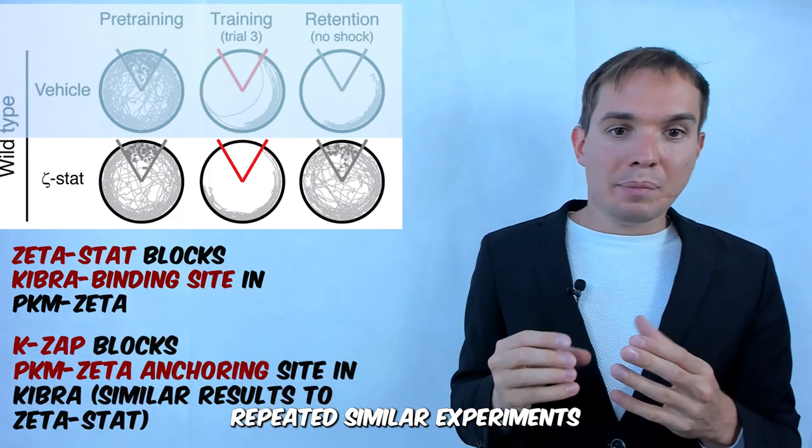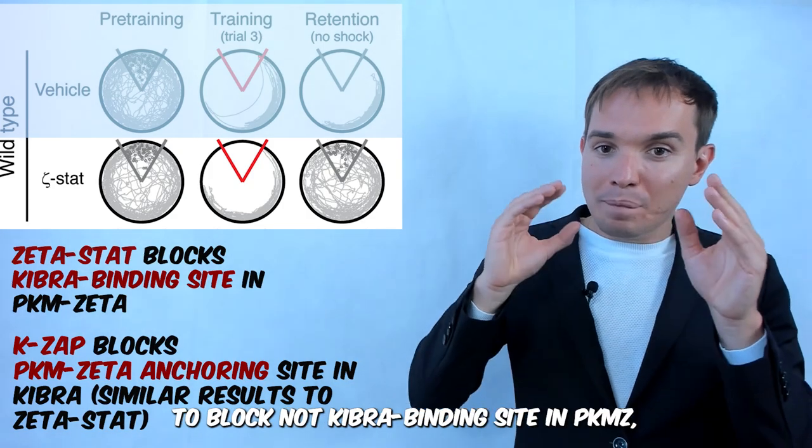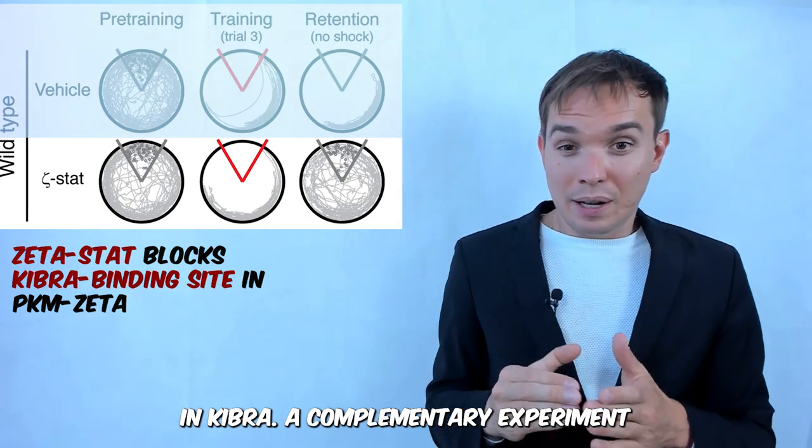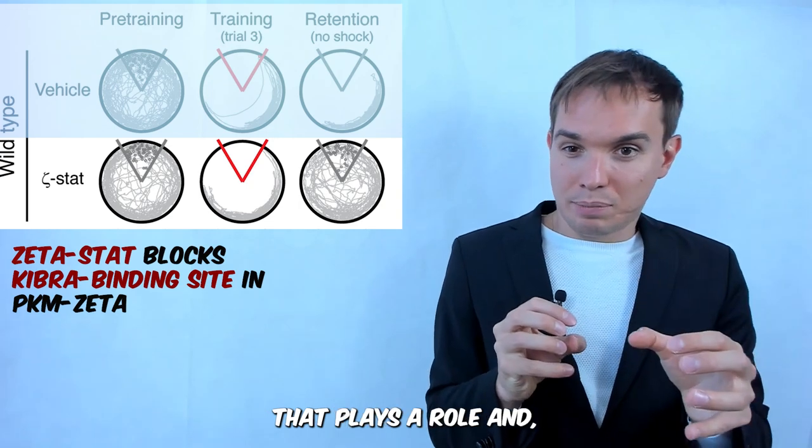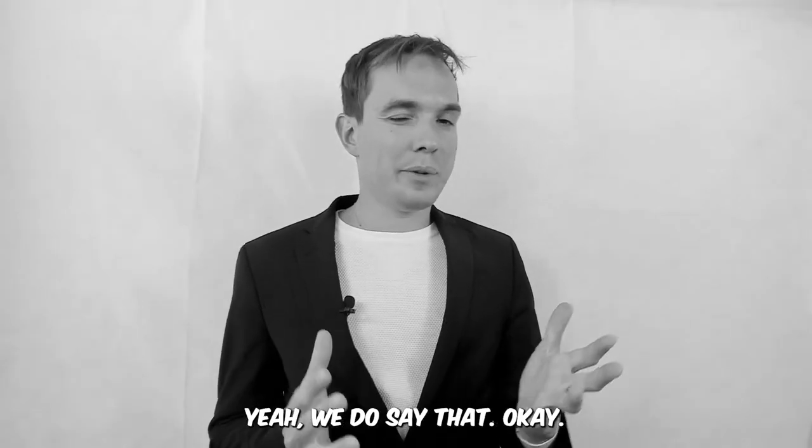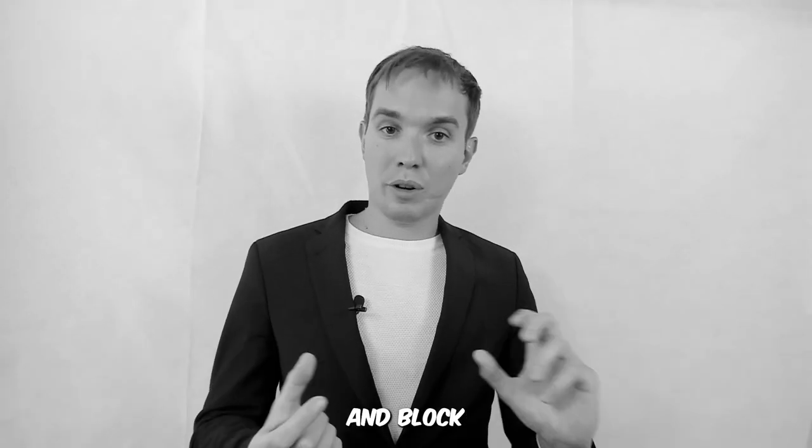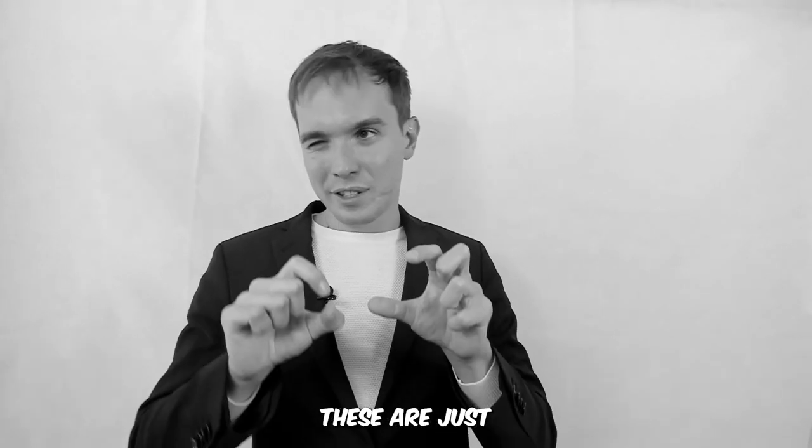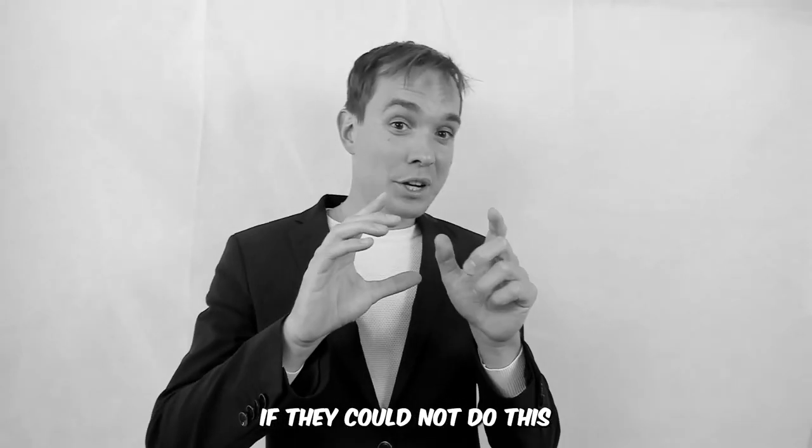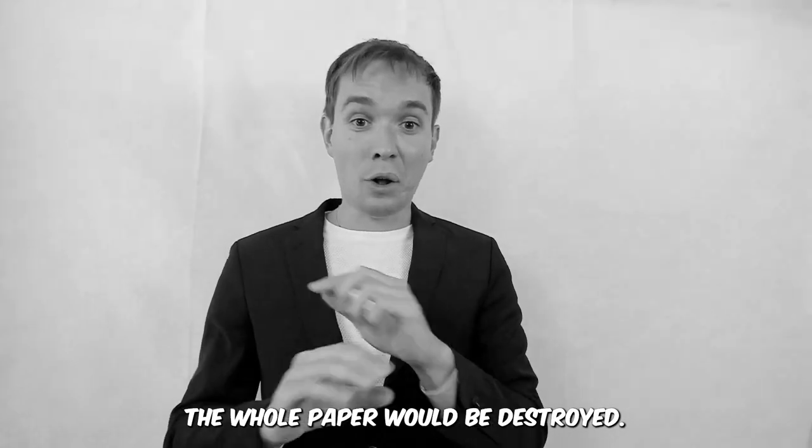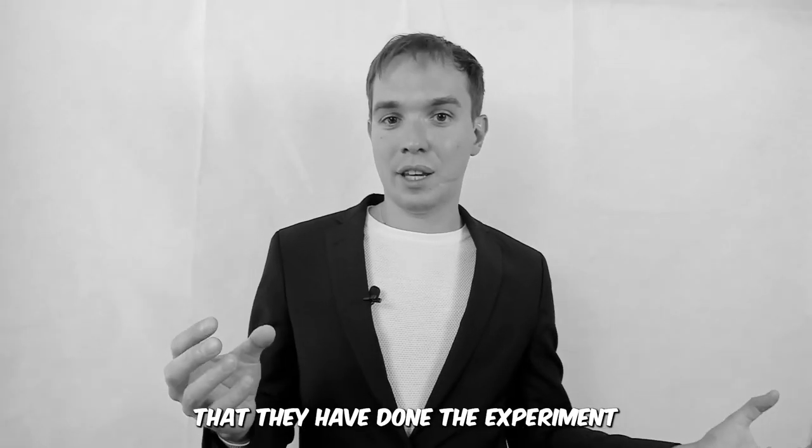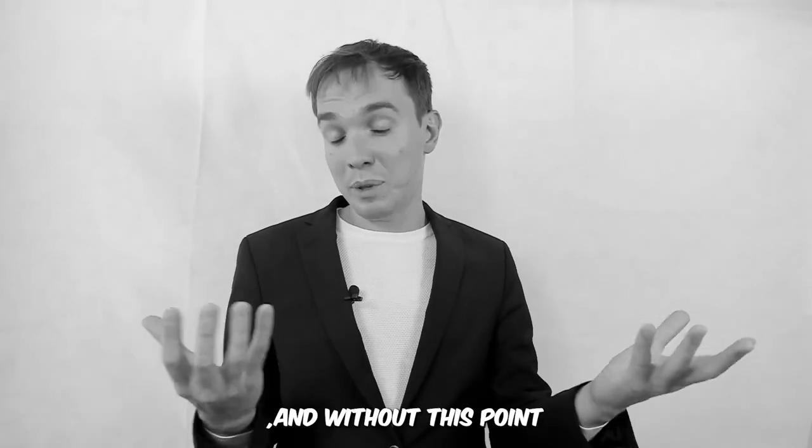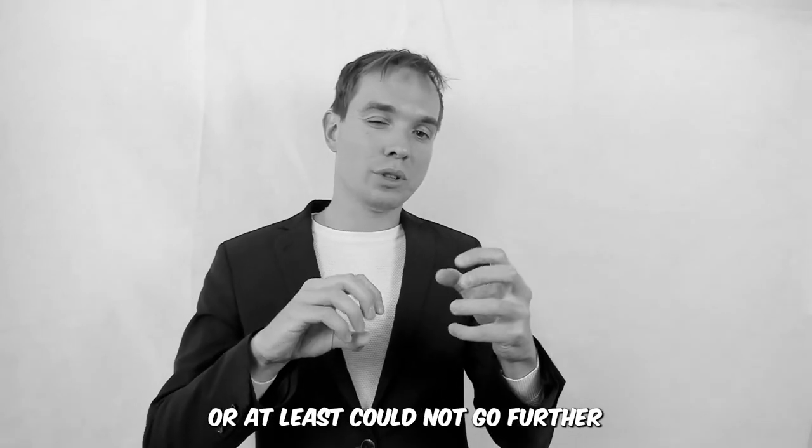Additionally, scientists repeated a similar experiment but now using another type of inhibitor to block not KIBRA binding site in PKMζ but the other way around—PKMζ anchoring site in KIBRA. Kind of a complementary experiment. To additionally prove that this is the connection that plays a role, and they get similar results at the end. We say they do the complementary experiments and block the other way around the PKMζ anchoring site in KIBRA. They got similar results. And this is just two, three sentences in a paper, but in fact, if they could not do this complementary experiment, the whole paper would be destroyed. Even that simple sentence, that they done the experiment the other way around and found similar results, it's a key point. And without this point, the scientists could not go further, or at least could not go further with the same hypothesis.